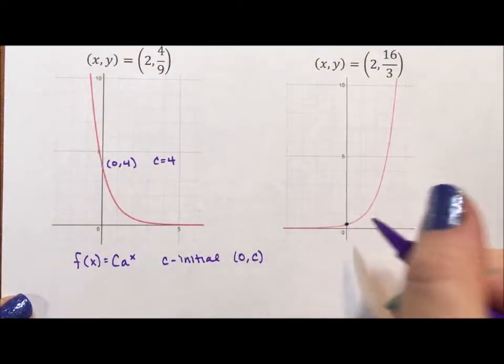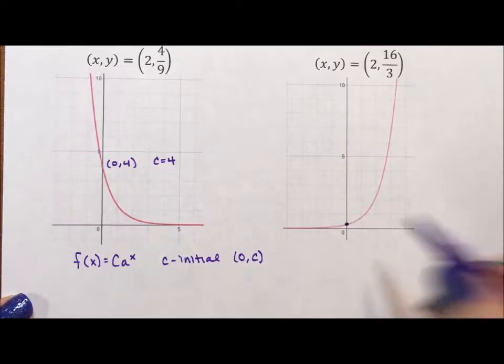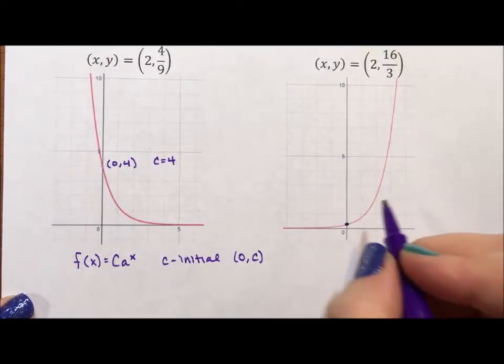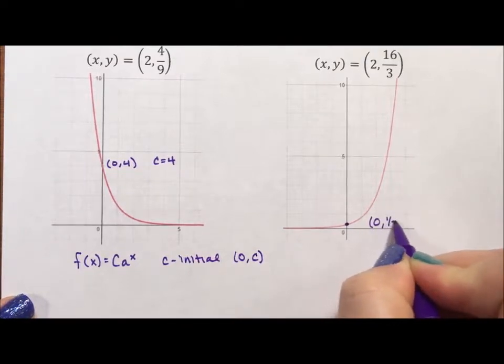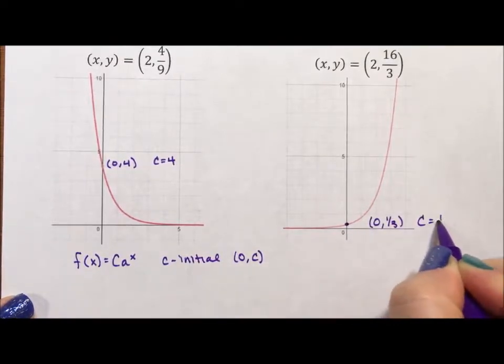This one, I'll tell you, is one-third. It's not obvious on here, but it helps when you write the problems and know. So in other words, c is one-third on this graph.